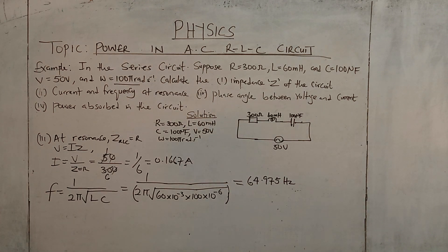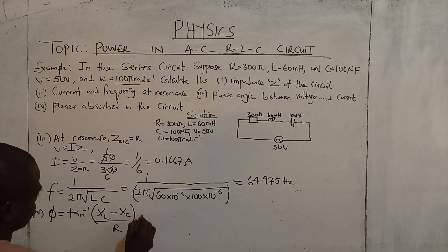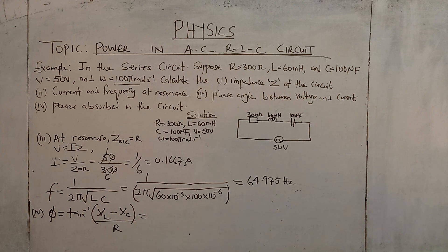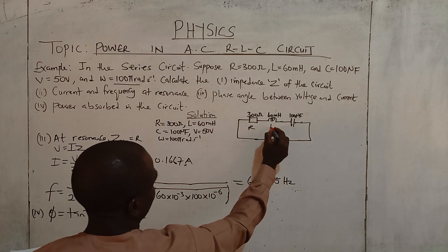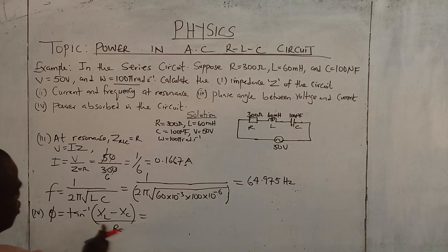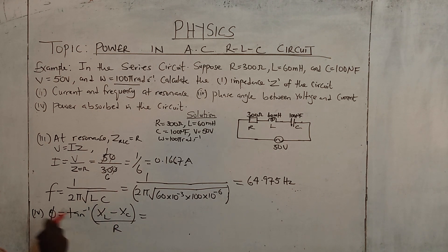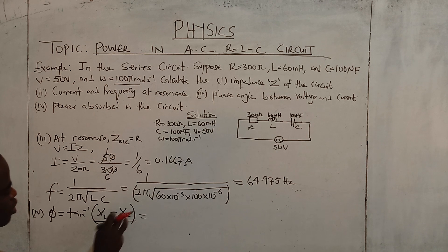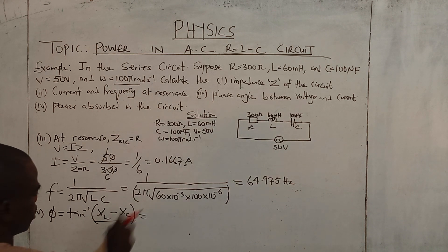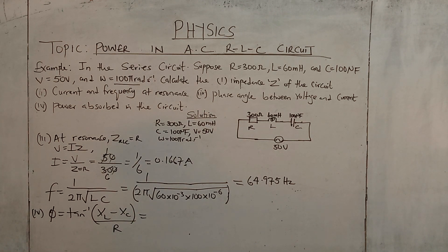The question says phase angle between the voltage and current. The formula for phase angle, voltage and current, is tan inverse of XL minus XC over R. Because we are dealing with the three, RLC. If it is only an inductive reactance, XL over R. It is only a capacitive reactance, XC over R.